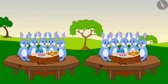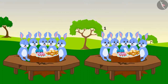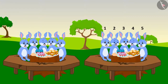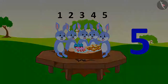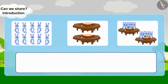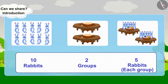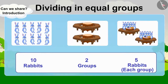Let us see how the rabbits are sitting. There are ten rabbits and they are sitting in two groups, each group having five rabbits. A total of ten rabbits are seated in two groups with each group having five rabbits. It is called dividing in equal groups.